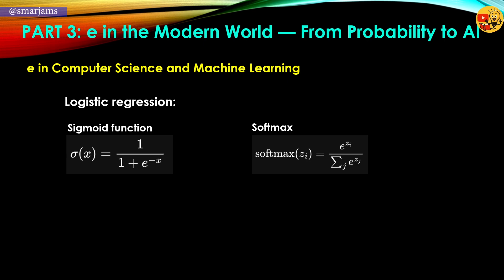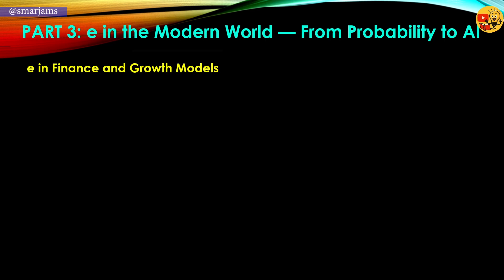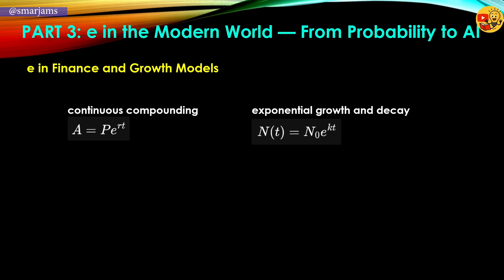This smooth mapping is what allows neural networks to choose among many options with confidence. And to train these models, we use cross-entropy loss, which again draws from Shannon's entropy, showing how much the model's prediction diverges from the truth. Meanwhile, in finance and population dynamics, e continues to model continuous change — whether it's continuous compound interest, where amount equals principal times e to the power of rate times time, or exponential growth and decay, where the system evolves as e to the power of k times time. E always shows up where change flows smoothly.